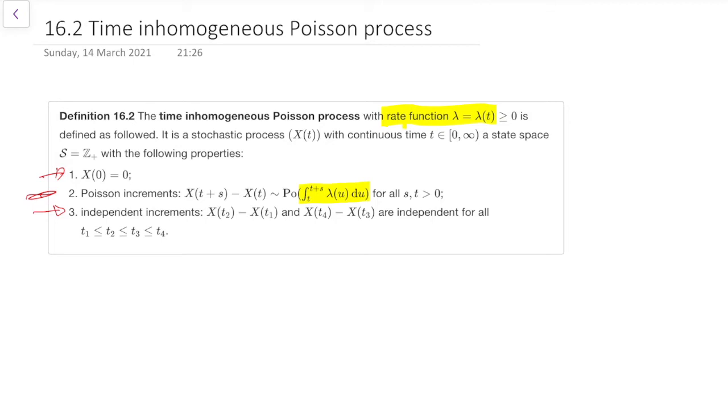But it's this second one that's a bit different, because here the increment is still Poisson distributed. But to get the parameter of that Poisson distribution, we have to integrate the rate over time. In particular, we integrate it over the interval from t to t plus s to get the parameter for the Poisson distribution.